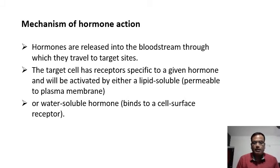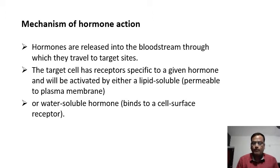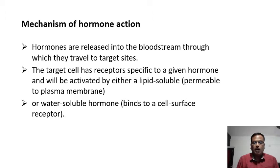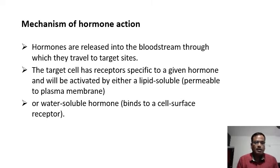The hormone will go and stimulate, or start a chain of biochemical reactions, in the target cells, target organs, or target tissues. The target tissue or cell must have receptors specific for that hormone. For example, thyroid stimulating hormone (TSH) is produced by the pituitary and the target organ is the thyroid gland, so thyroid gland cells must have receptors for TSH. Target cells have receptors specific to a given hormone, activated by either a lipid-soluble or water-soluble hormone.